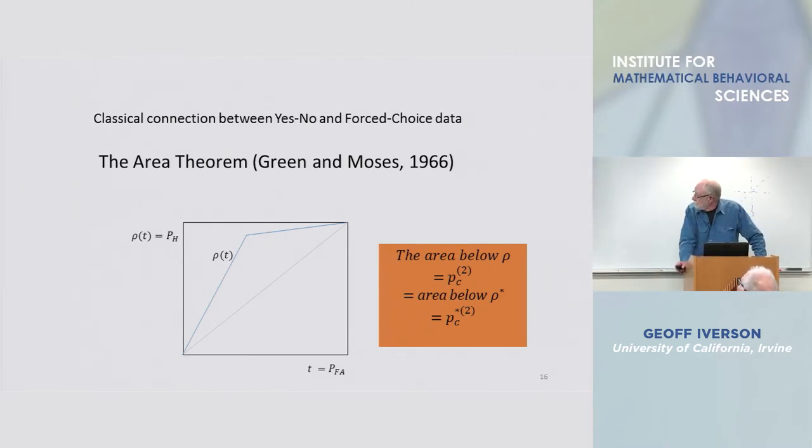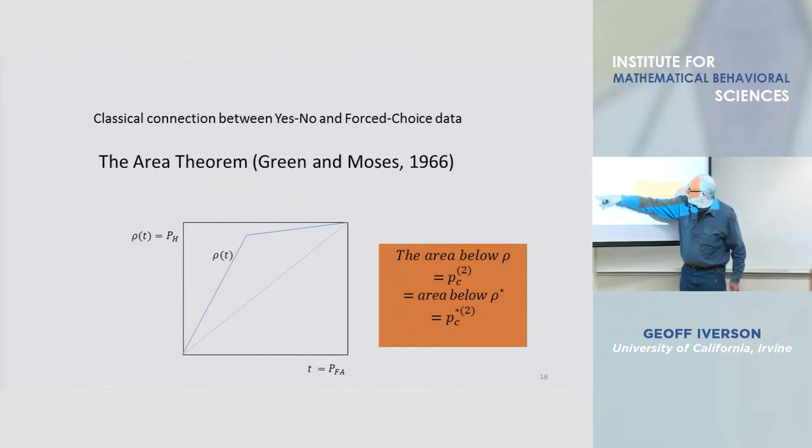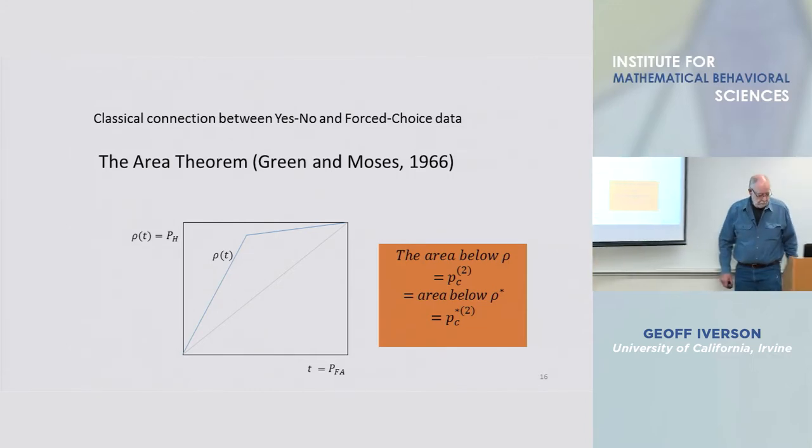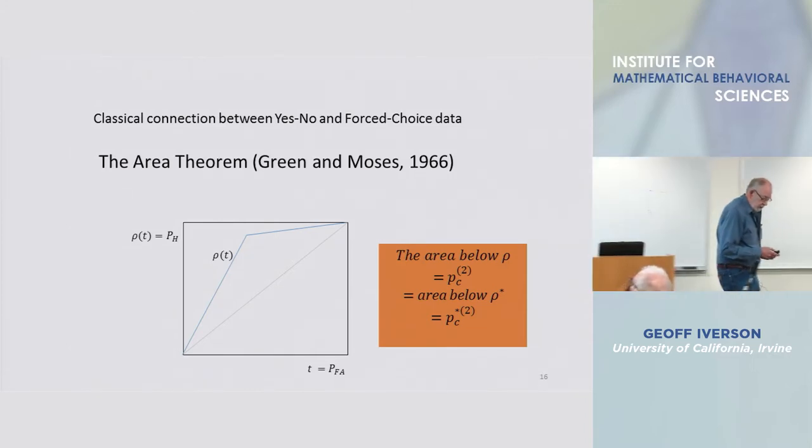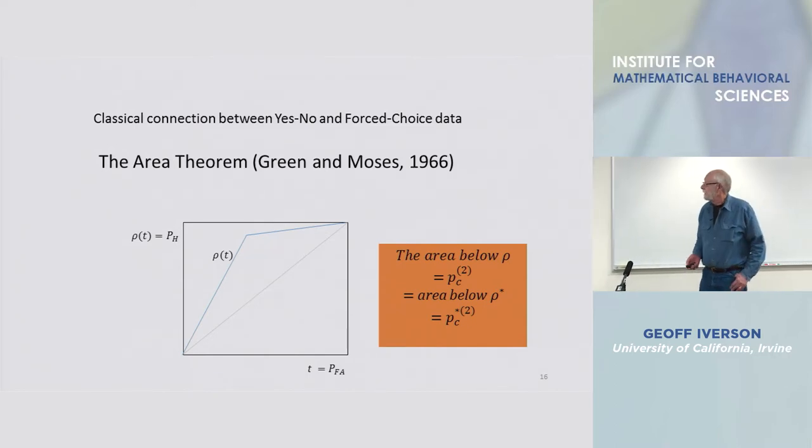that first appeared in work by Dave Green and Moses in 1966, and it simply says the probability correct in a two-interval task is the area below the corresponding yes-no ROC. So this area is probability correct in a two-interval task.